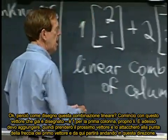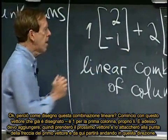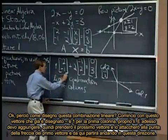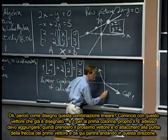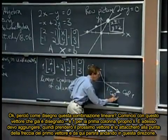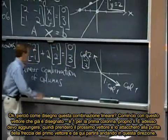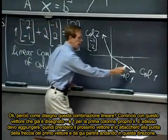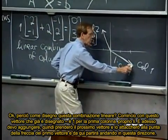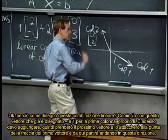So how do I picture this linear combination? I start with this vector, that's already here. So that's one of column one, that's one times column one, right there. And now I want to add on, so I'm going to hook the next vector on to the front of the arrow, we'll start the next vector, and it'll go this way.